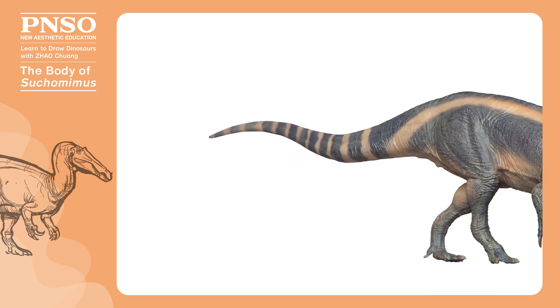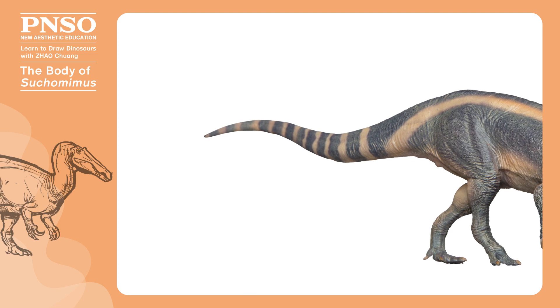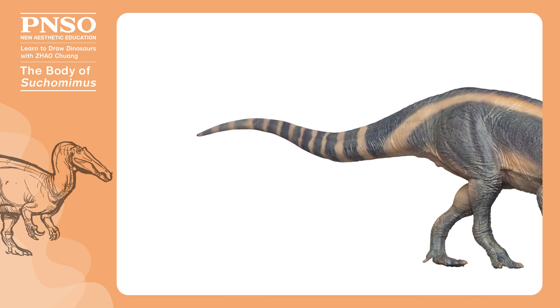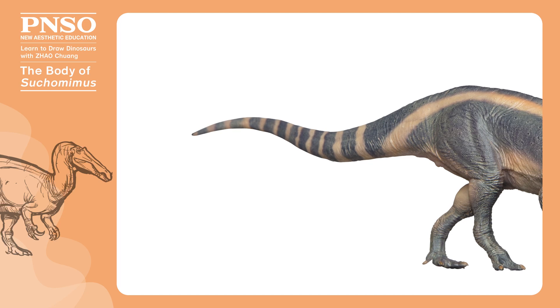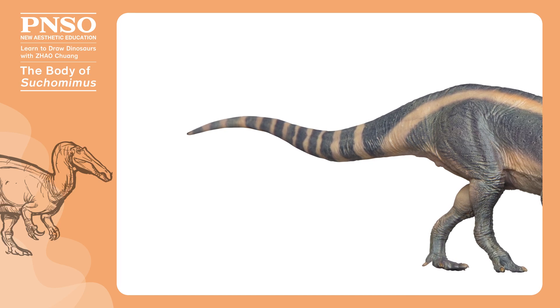In addition, its tail was not a fish-shaped tail like that of spinosaurus, but had a thin end like most carnivorous dinosaurs, without any structure that could assist swimming.